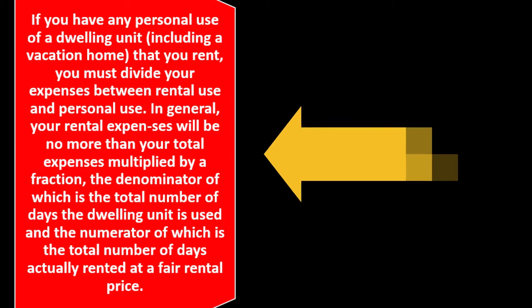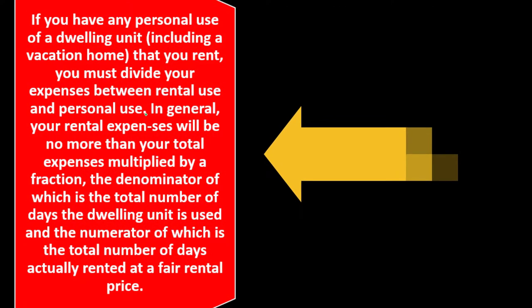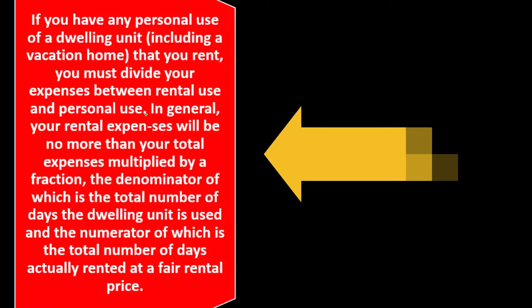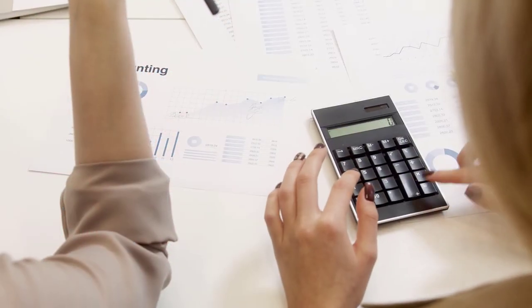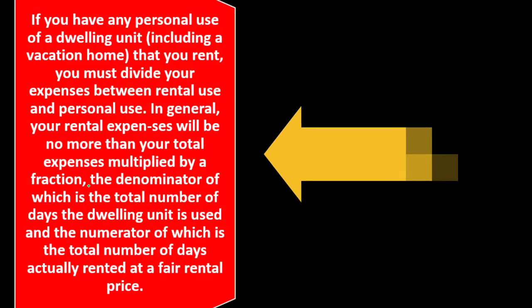If you have any personal use of a dwelling unit, including a vacation home that you rent, you must divide your expenses between rental use and personal use. We're focusing on the expenses — income only came from the rental part; you didn't pay yourself income from the personal part. Some expenses are for the property as a whole and must be allocated. In general, your rental expenses will be no more than your total expenses multiplied by a fraction, and obviously from the taxpayer side we would like to categorize more things to the rental property, since that's the deductible side — as opposed to the personal side, which is non-deductible.